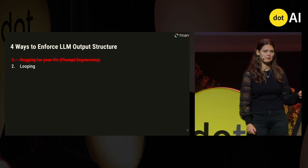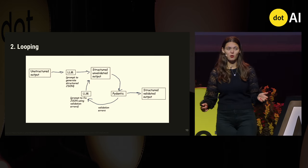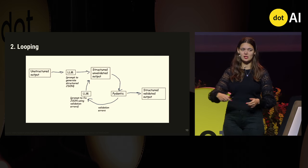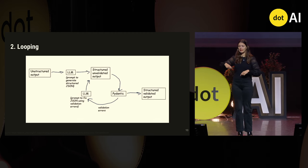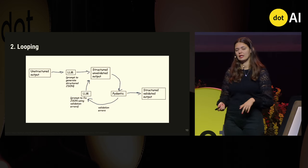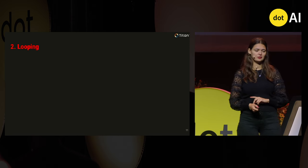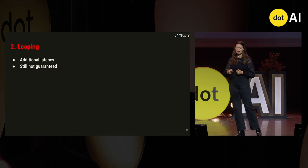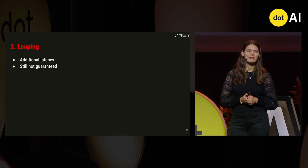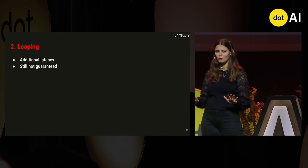Let's try looping — another method that got a lot of popularity last year. Looping is essentially when you ask the model to try over and over again: try to output JSON, you've done it wrong, try again, and again, until it gets it right — which it may or may not do. Not my preferred method. It adds additional latency, because every time it loops it has to do the whole generation again. And even then, it's still not guaranteed. So looping, even though popular last year, is probably not what we want.